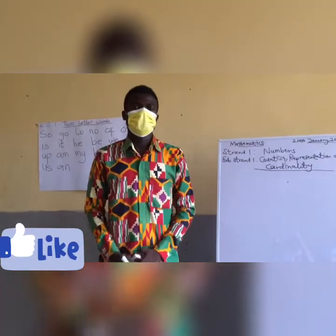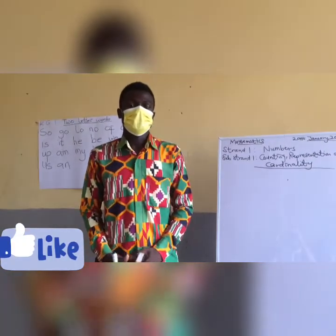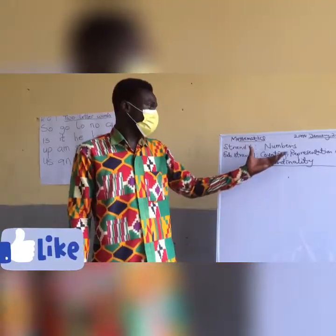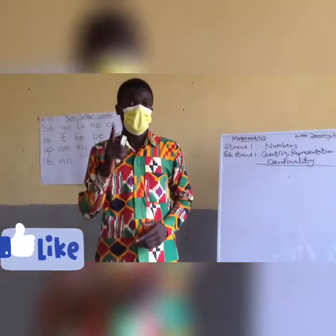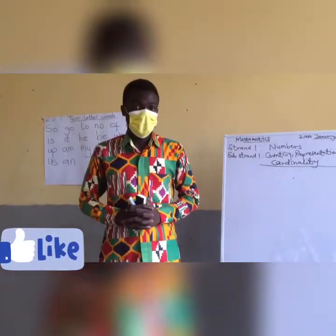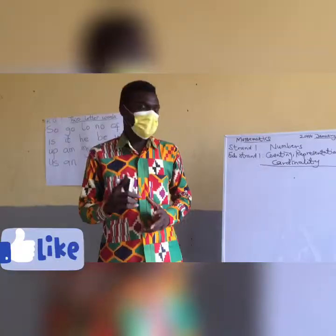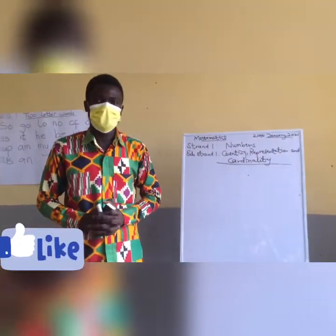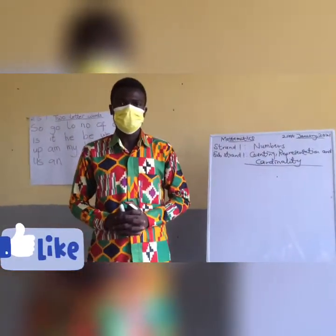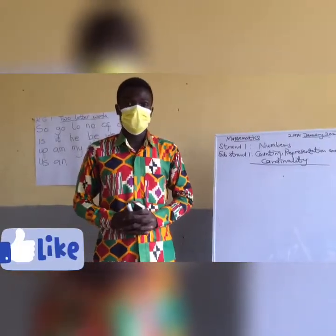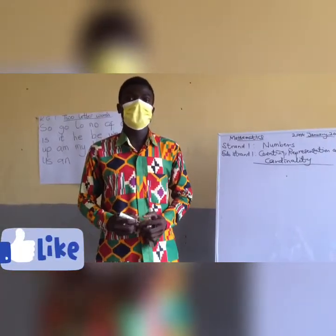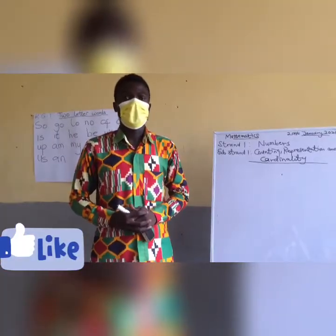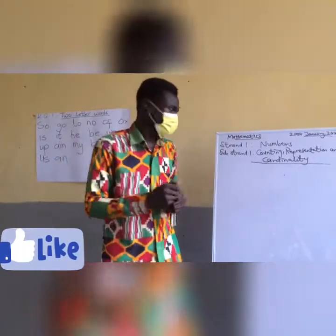Welcome back to Easy Mathematics. Today we want to talk about NAPEST, that is our strand number one. The substrand number one is counting, representation and cardinality. Under our substrand one, we want to talk about modeling of quantities up to 10,000.